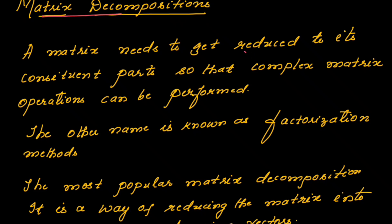A matrix needs to get reduced to its constituent parts so that complex matrix operations can be performed. This is very true when we want to perform some complex operations on a matrix — the given matrix needs to get reduced into simplified matrices. The other name given to this process of matrix decomposition is factorization.